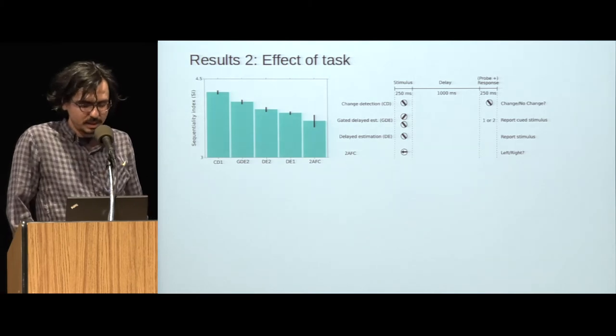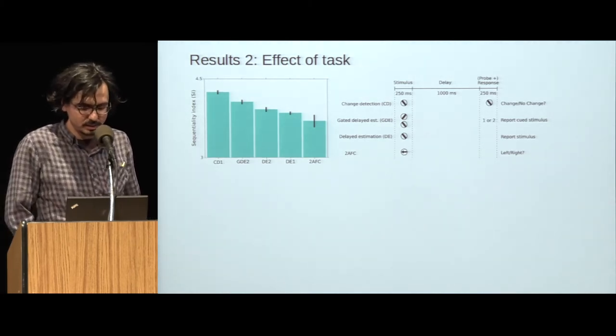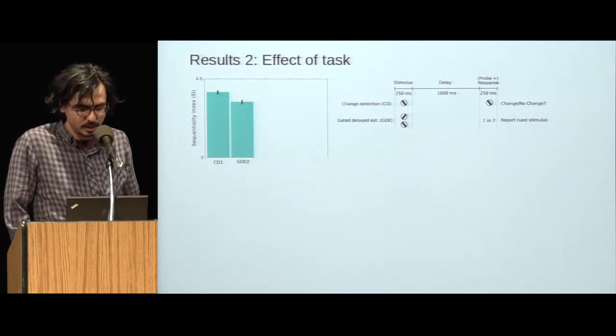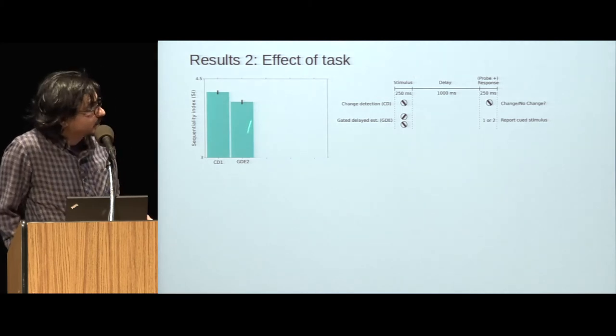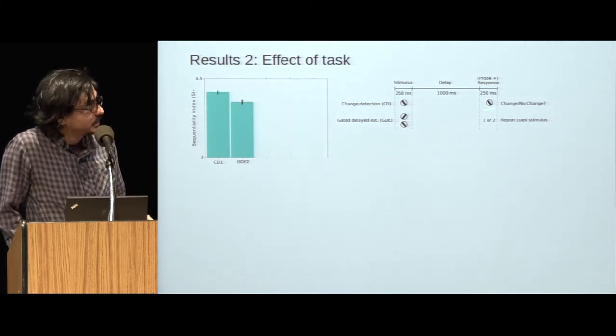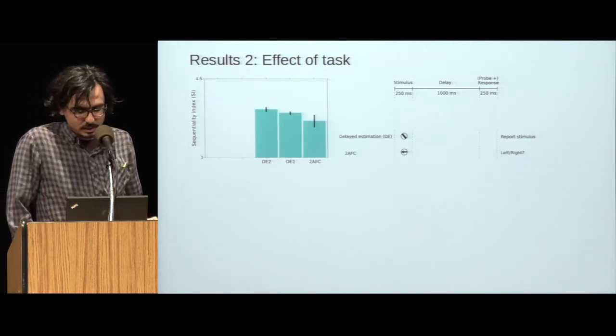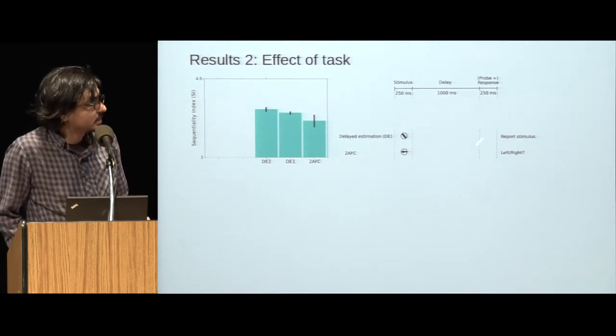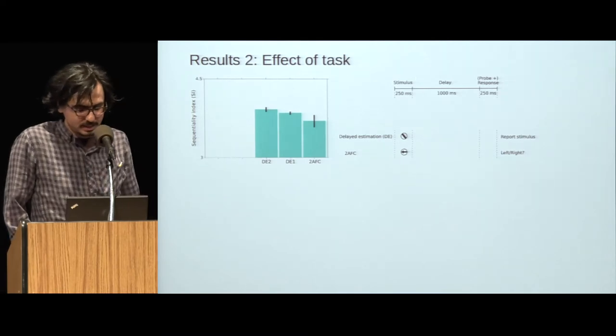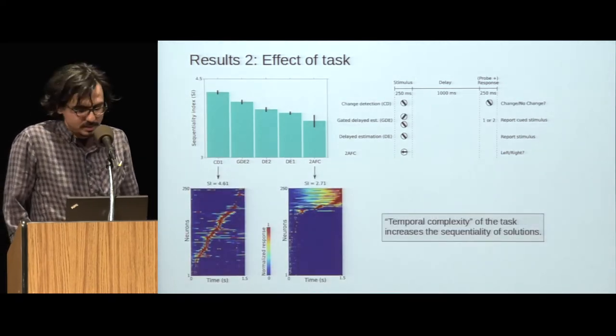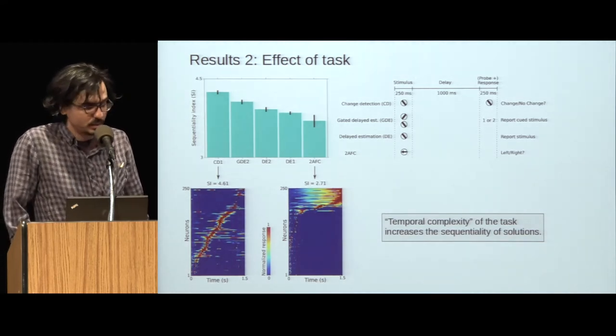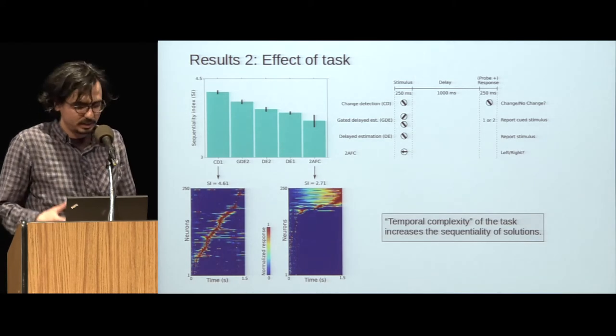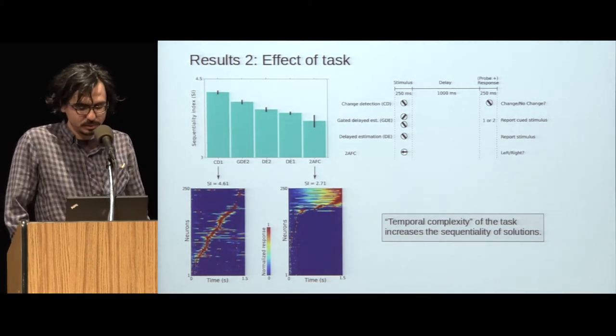So the question is why is there such a difference between the tasks? To understand this, let's look at the schematic diagram of our tasks. We noticed that tasks with higher sequentiality have a more complex temporal dependency. For example, in both change detection and gated delay estimation tasks, the network receives an input after the delay period, and the target response depends on this input. Whereas in the other tasks, the network doesn't receive any input after the delay, and its target response doesn't depend on what happens in this period. So we say that these tasks have lower temporal complexity. We hypothesize that the temporal complexity of the task increases the sequentiality of the solutions. The reason intuitively is pretty clear. Tasks with higher temporal complexity require a higher frequency temporal basis, and sequential activity in the recurrent population essentially provides such a basis.